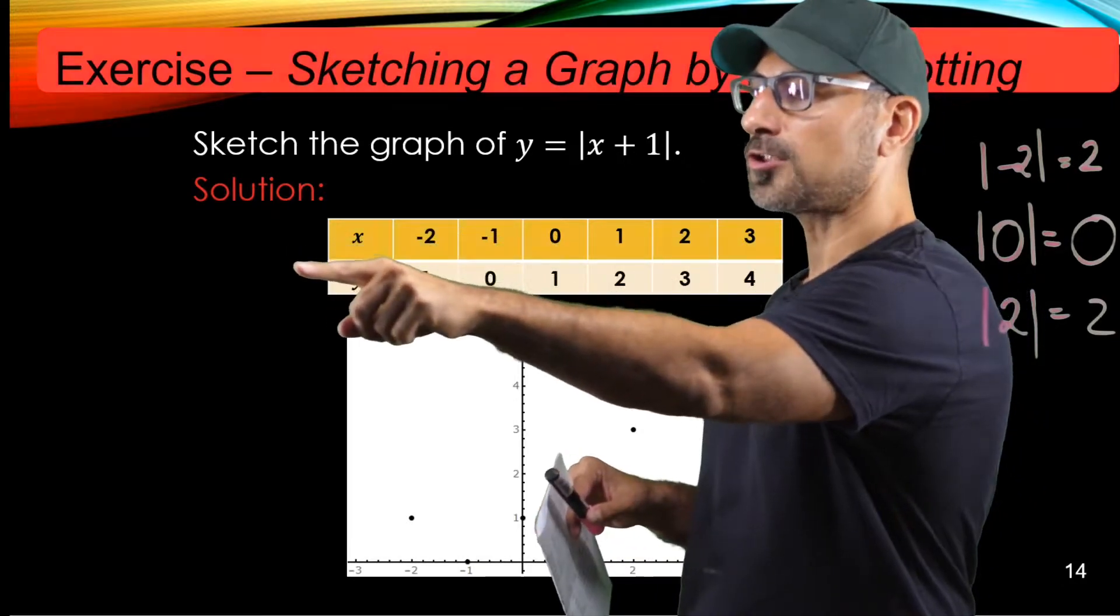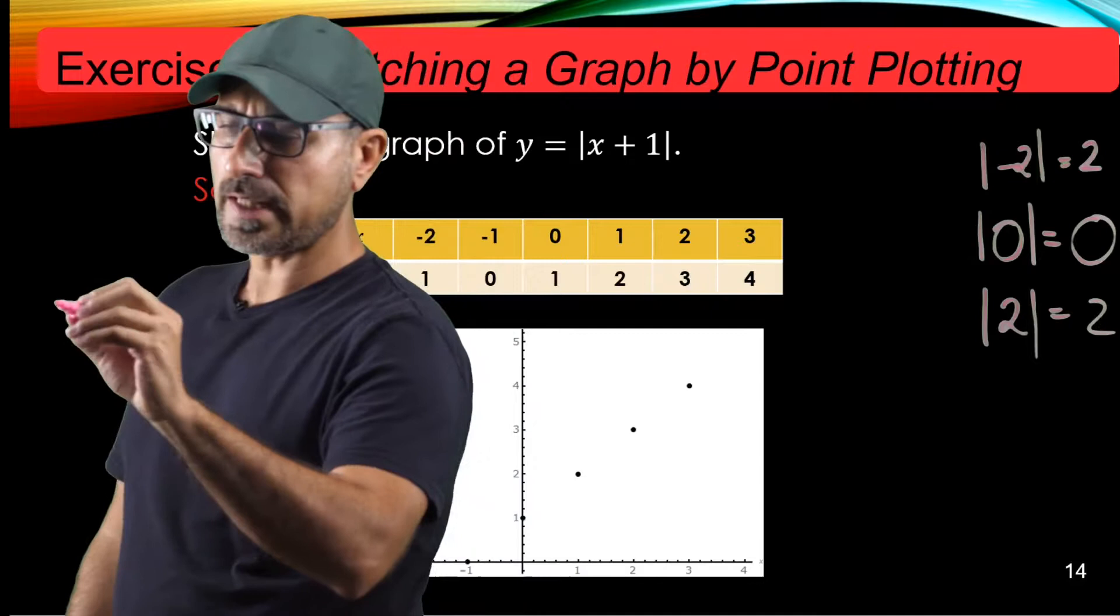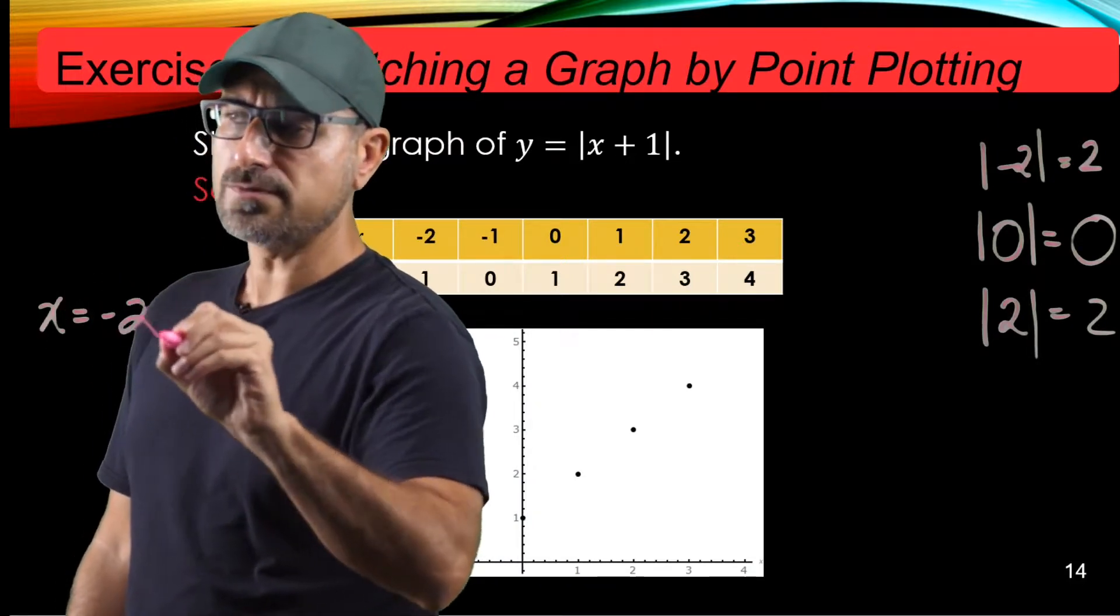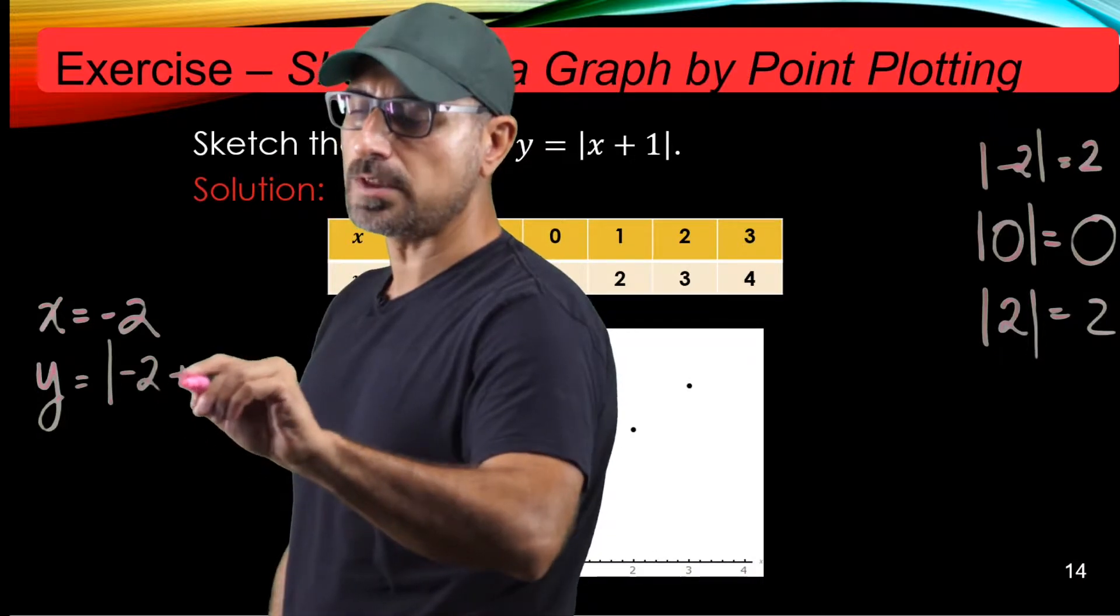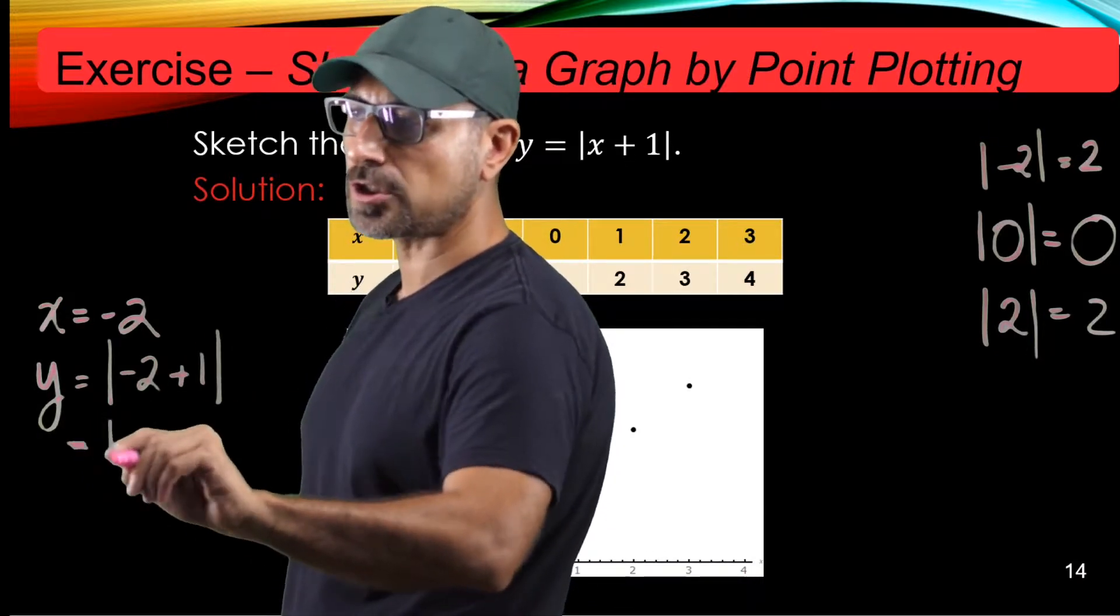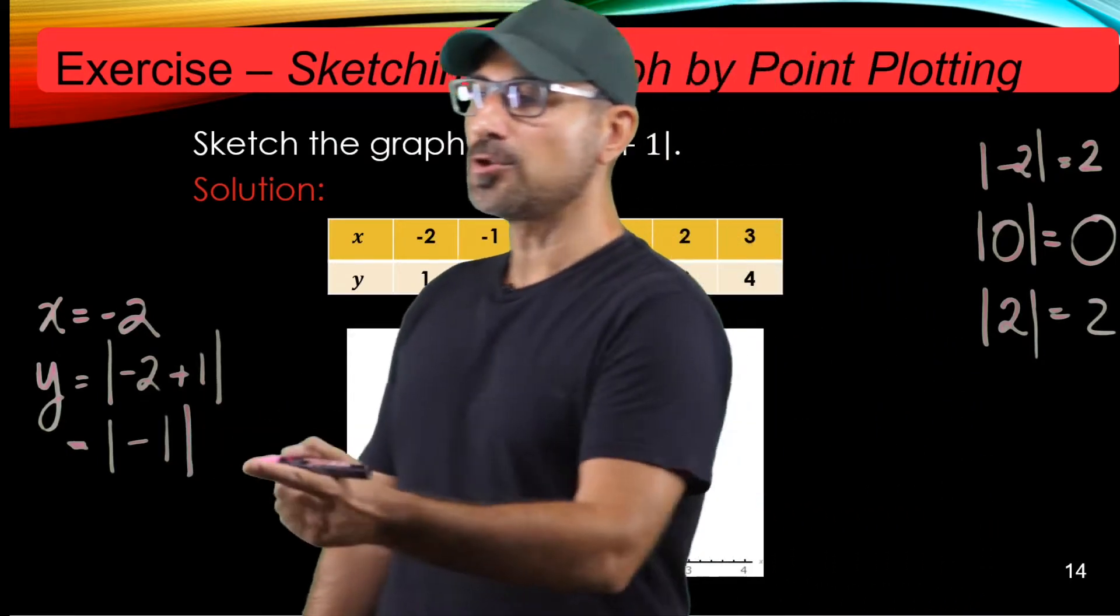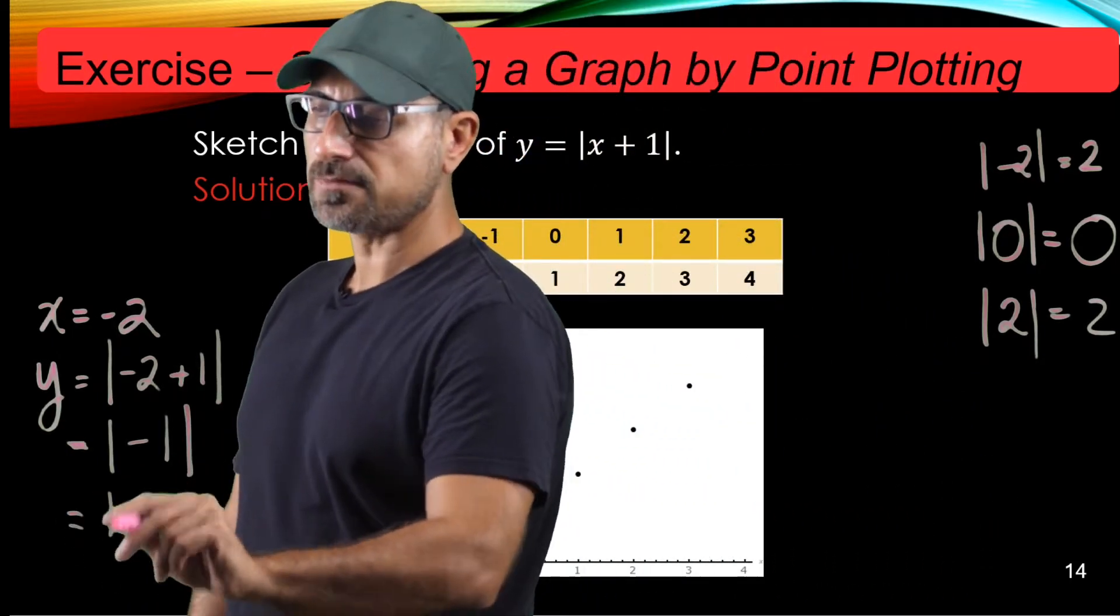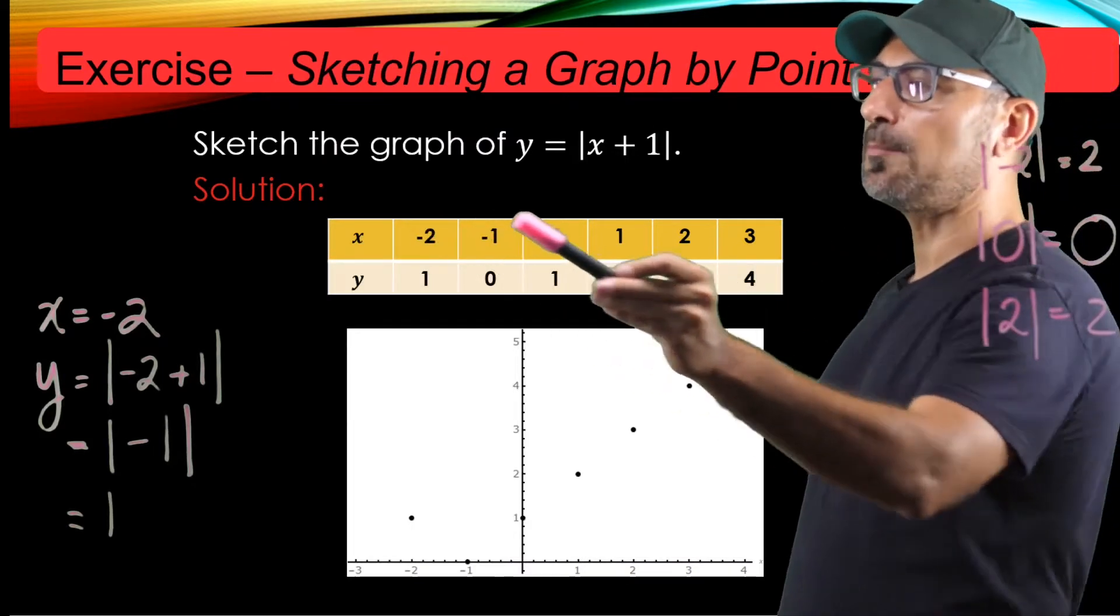I did the function evaluation. I'll just do one example for you: for x equals negative 2, the corresponding y value is going to be negative 2 plus 1 in the absolute value, which is negative 1, and the absolute value of negative 1 is 1. I did this for all six sample x values.